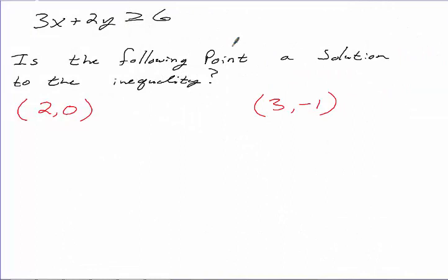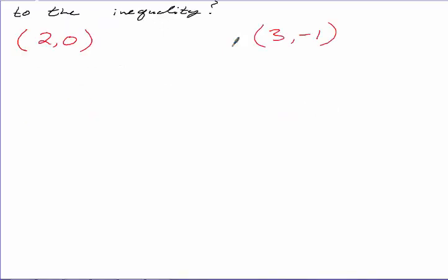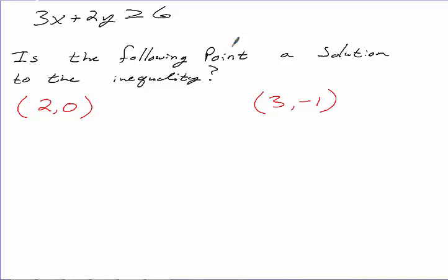So first things first: how do you identify if a point is a solution to an equation? What does it mean to be a solution? If I plug in the x and y coordinate and it satisfies the inequality, then it is a solution. So this is just a substitution — take your x value and your y value, plug them in, and I want to know if this is true or false.